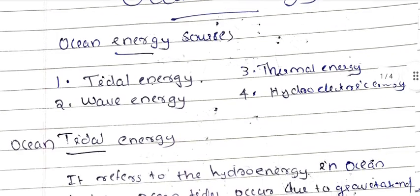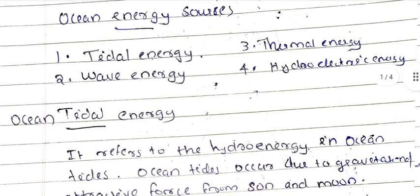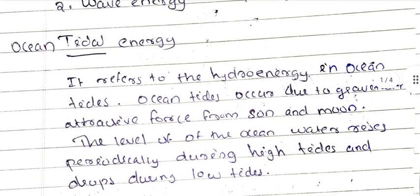We are going to discuss Ocean Tidal Energy. Ocean Tidal Energy refers to the hydro energy in ocean tides. Ocean tides occur due to the gravitational attractive force from the Sun and Moon. The level of ocean water rises periodically during high tides and drops during low tides.